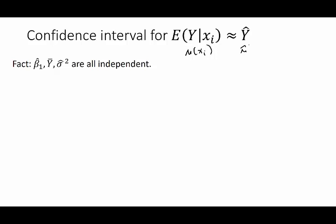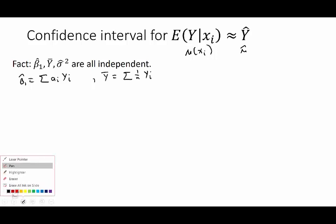I'm going to state a fact we won't fully prove, although I'll give some intuition for why it's true and why it's astounding: β̂₁, ȳ, and σ̂² are all independent random variables. Why is this astounding? Because β̂₁ can be written as a linear combination of the response values y_i, and ȳ is also a linear combination of those same y_i's with equal weightings. How can two random variables defined as linear combinations of the same set of random variables be independent?